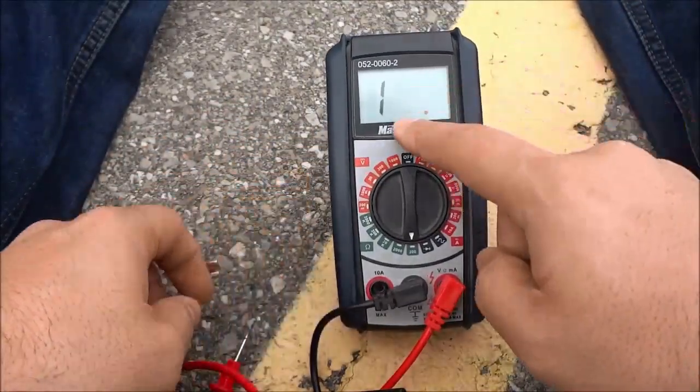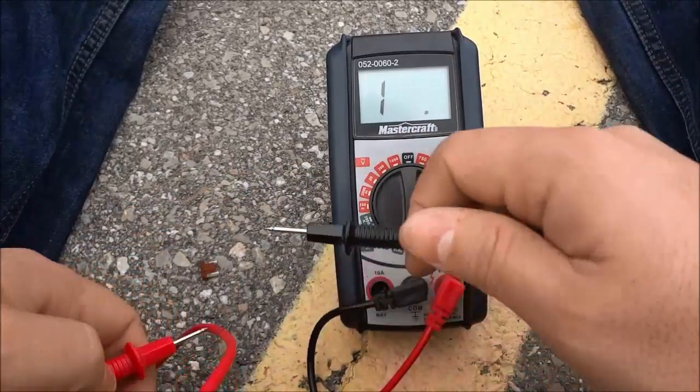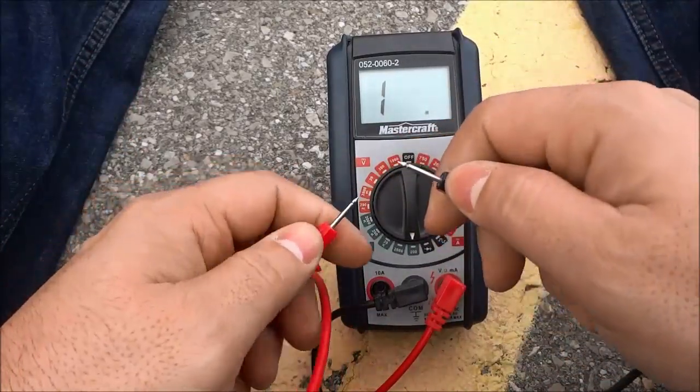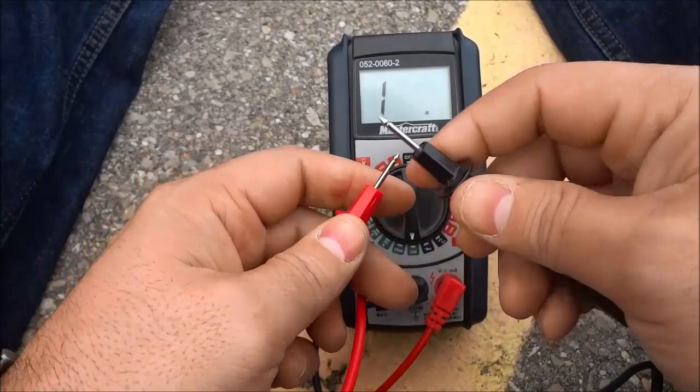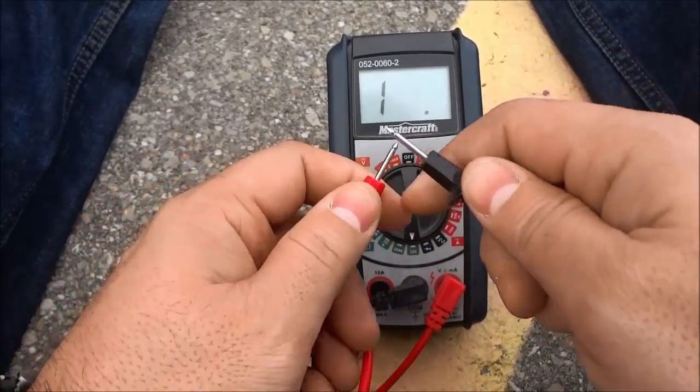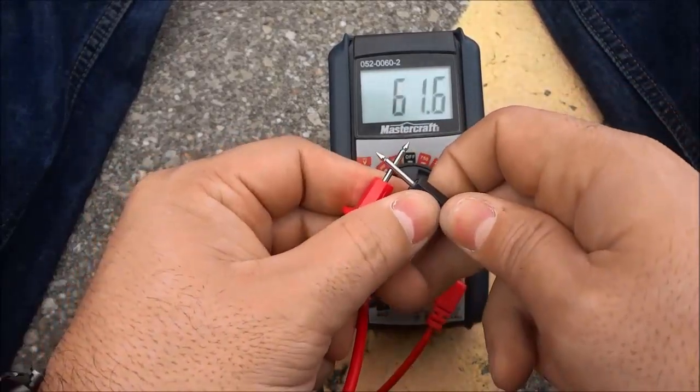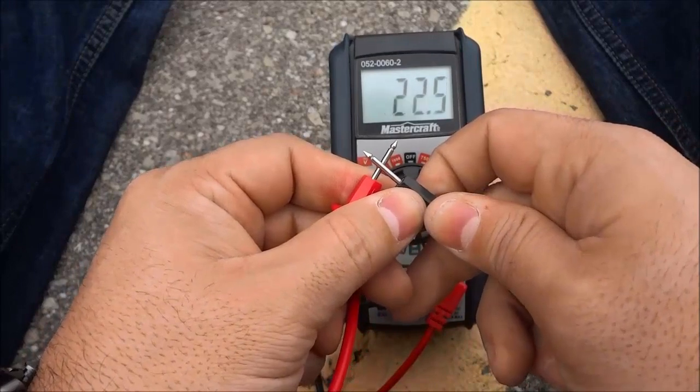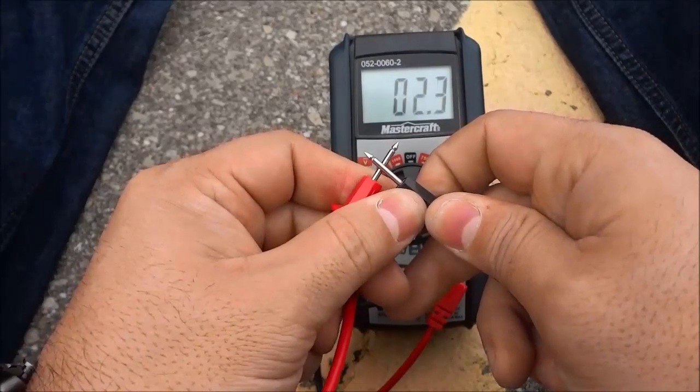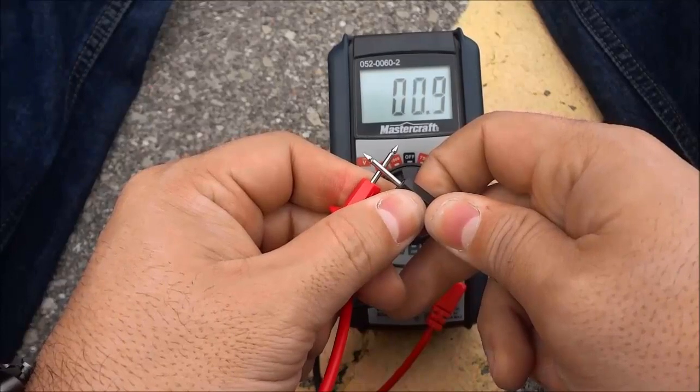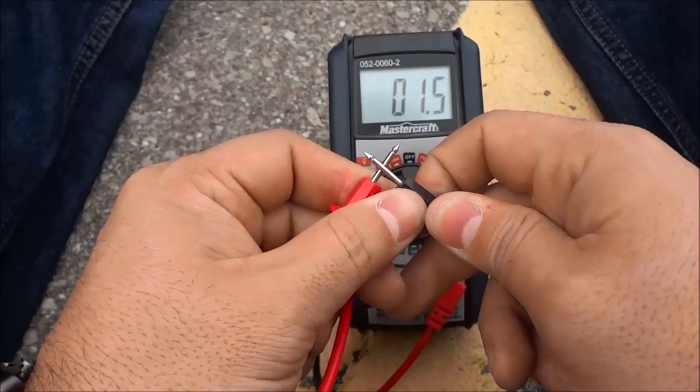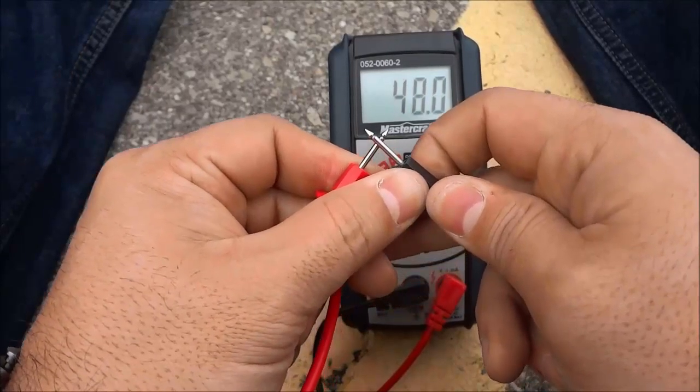As you can see the number right here is one and the first thing you're going to do before testing the car fuse is touch the two terminals together and see what number you get. You should be getting a number that is zero or close to zero. As you can see right now the number is going down I'm getting .8, .7, a number that is close to zero.